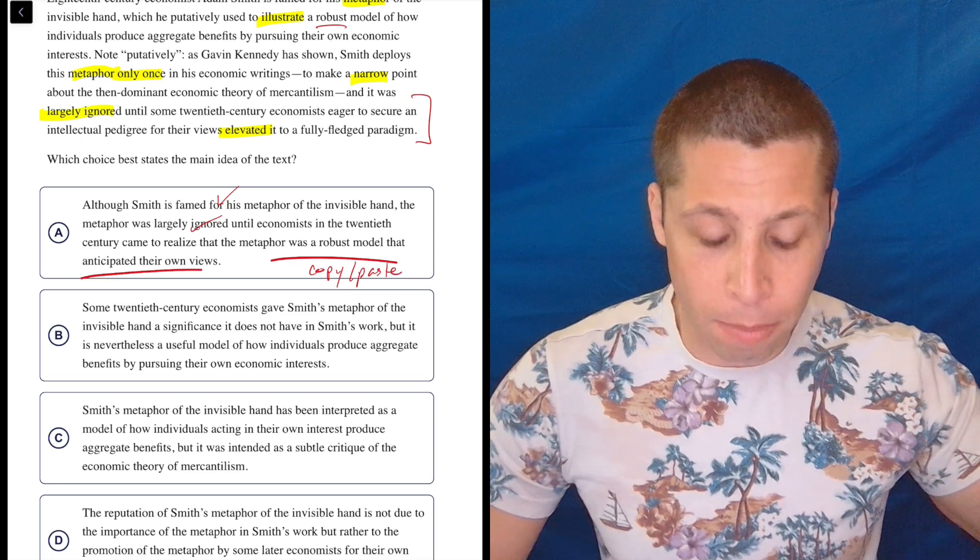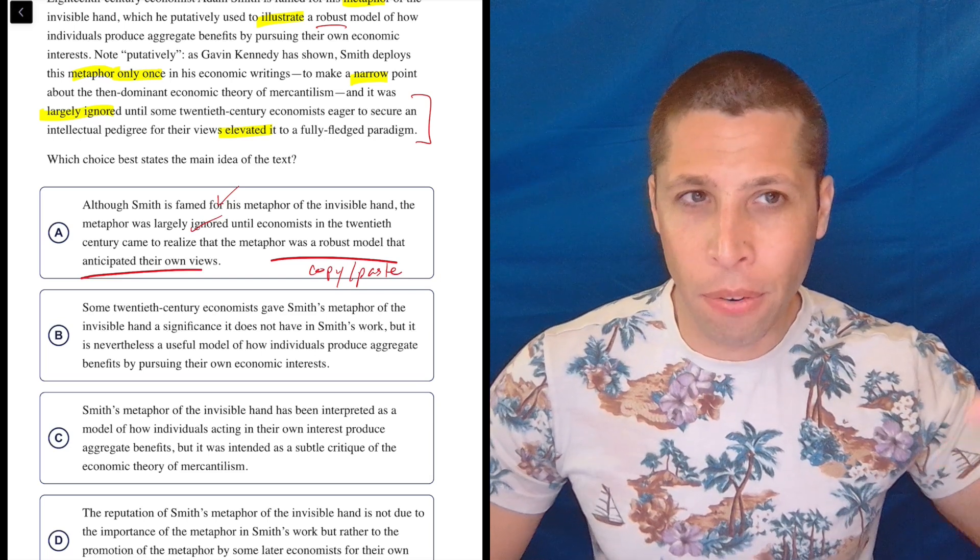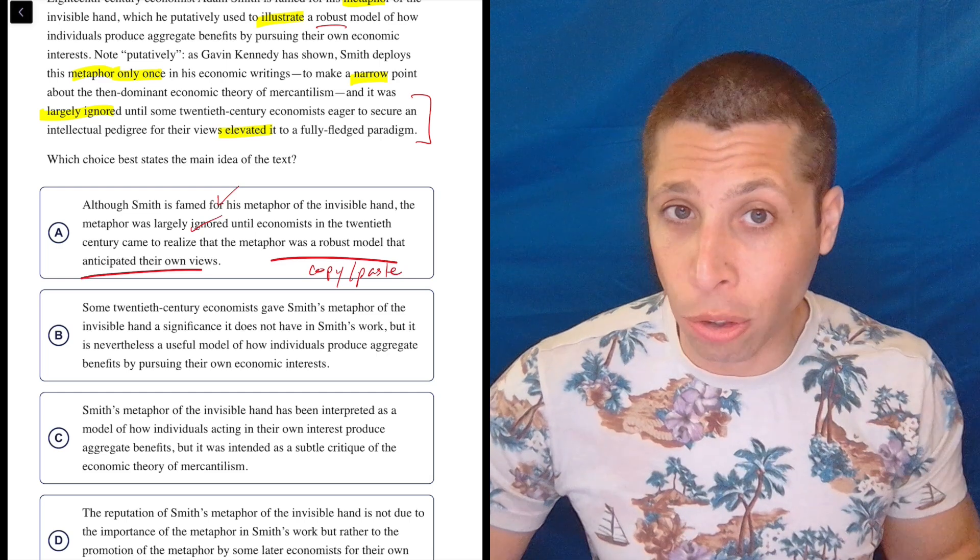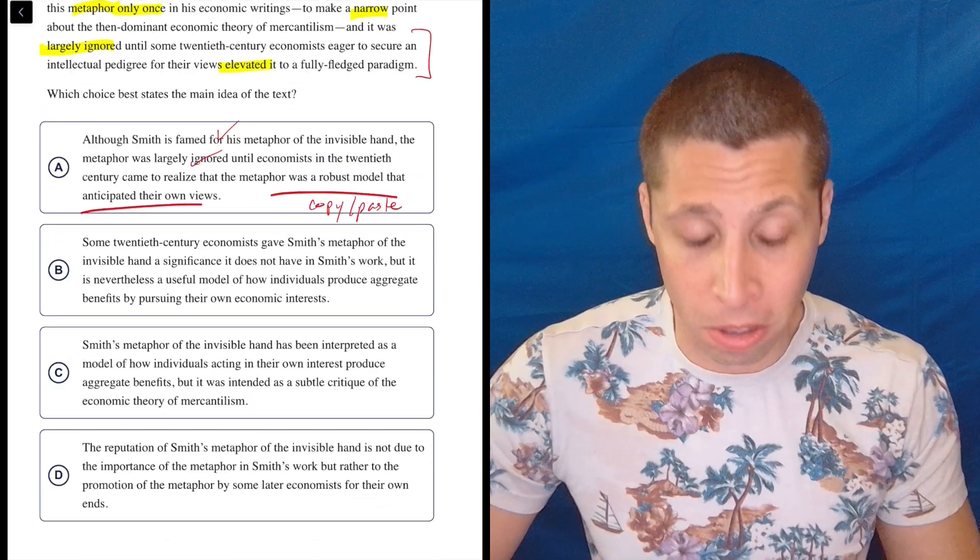Why did those economists in the 20th century start to pay attention to this? For now, I'm not going to worry about it. I know the first part of choice A is right. Let's see what the other choices bring, and then we'll come back to this if I need to wedge some choices apart.